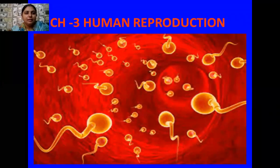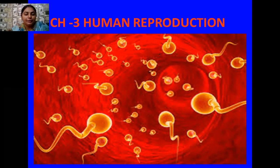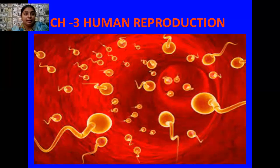Good morning students. Today we are going to do the revision of chapter 3 of our NCERT book, and our chapter 3 is human reproduction. So what we are going to revise in this chapter: we are going to study about the male and female reproductive system in detail, what are the various organs functioning in both systems. Then we will study in detail about the process of gametogenesis.